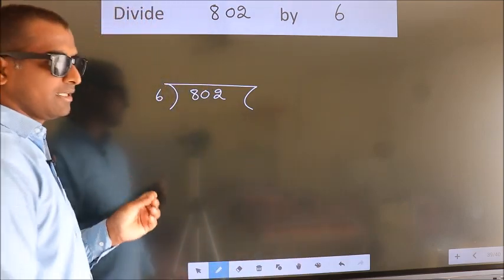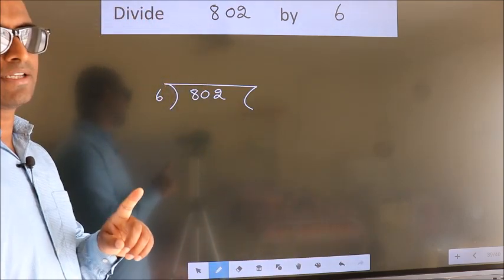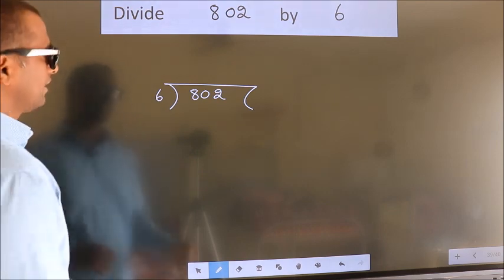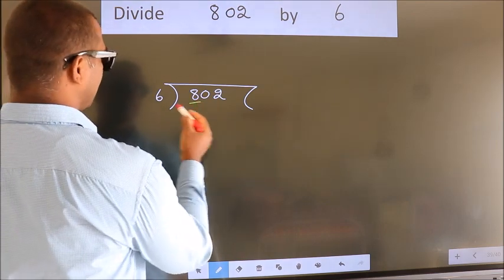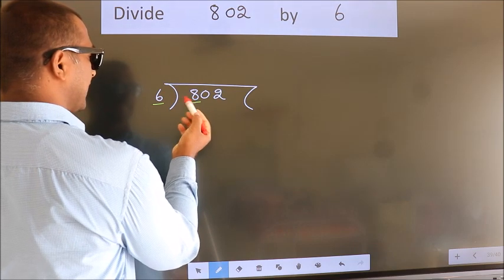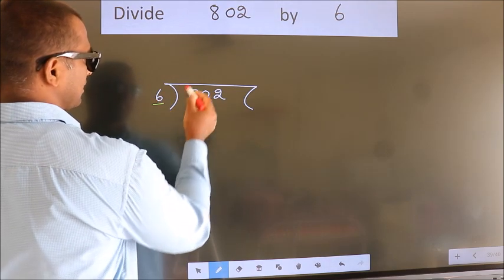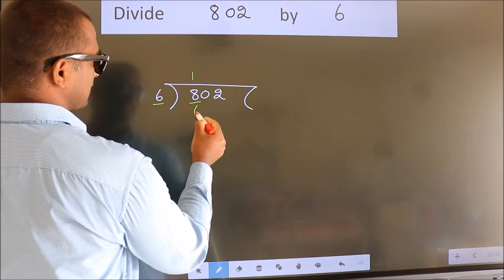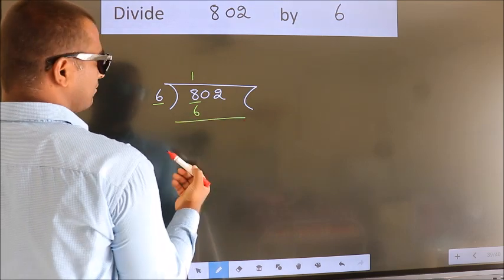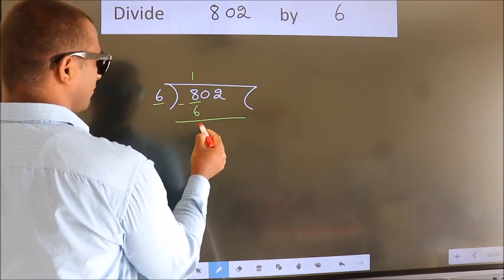This is your step 1. Next, here we have 8, here 6. A number close to 8 in 6 table is 6 ones, 6. Now we should subtract. We get 2.